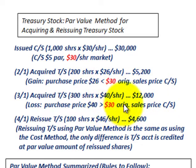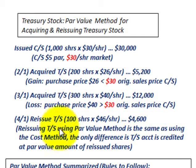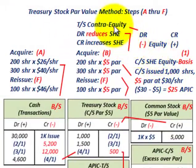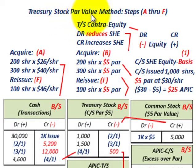We go back to that original issue price in our common stock. On 4-1, we're going to reissue 100 shares of treasury stock at $46 per share, equating to $4,600. Reissuing treasury stock using the par value method is the same as using the cost method. The only difference is that the treasury stock account is credited at its par value amount for the reissued shares. We'll go through steps A through F.